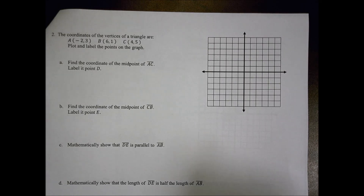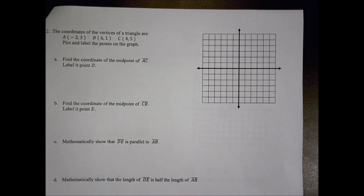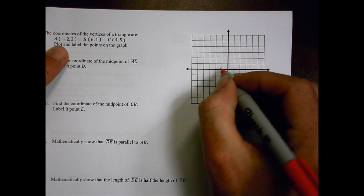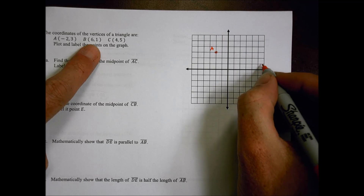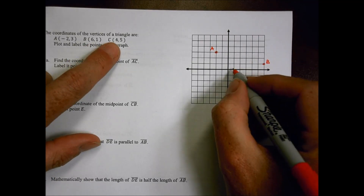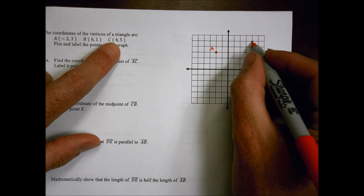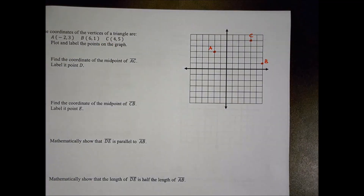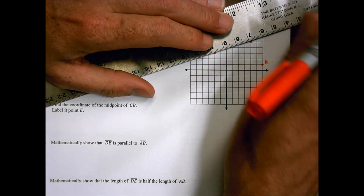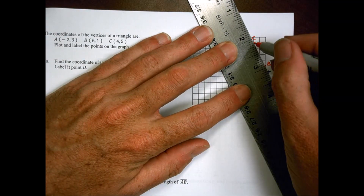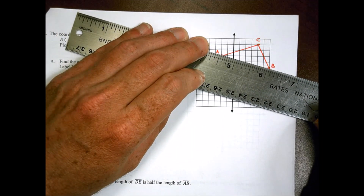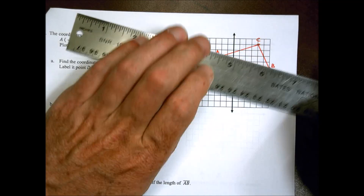I'll skip number one since your teacher likely did that in class, and go to number two. First, we're going to plot our points on the coordinate plane. Point A is at negative two, comma three — so we go two left and three up. Point B is at six, comma one, and point C is at four, comma five. Those are the vertices of the triangle, and I'll connect them with a straight edge to form the triangle.